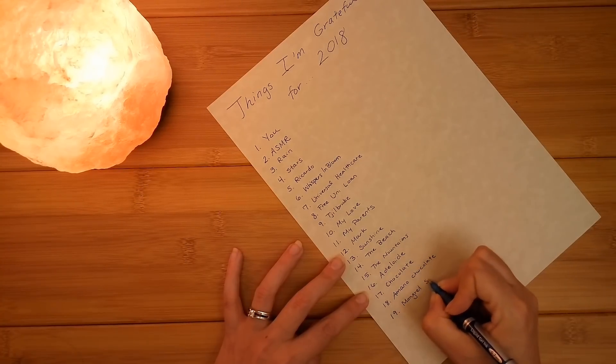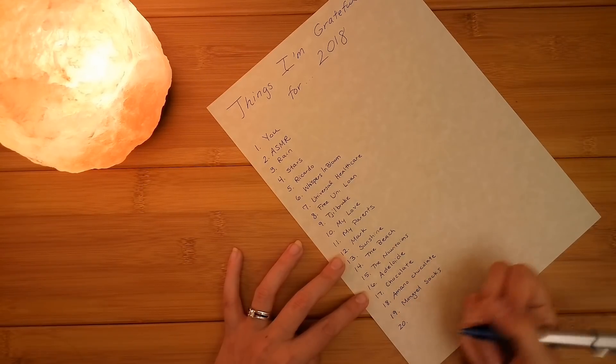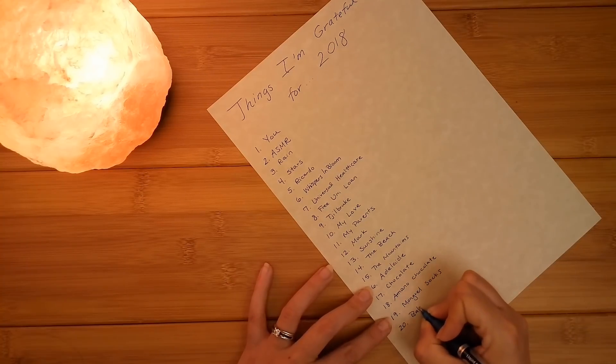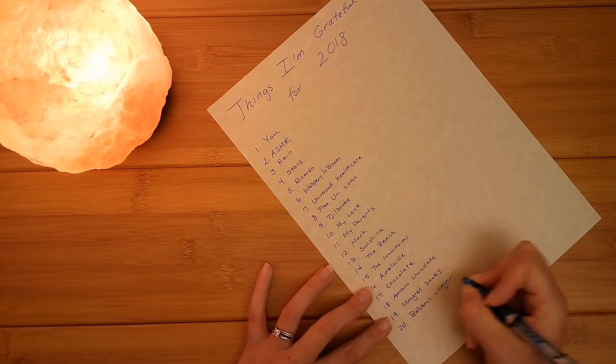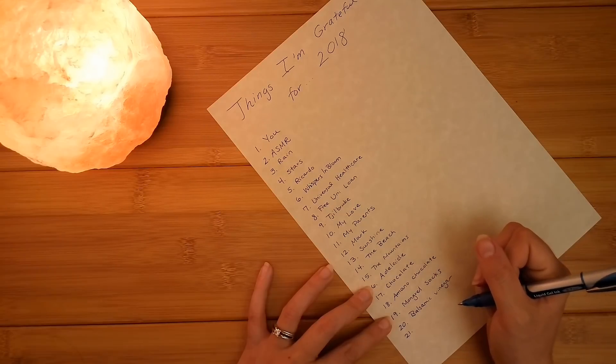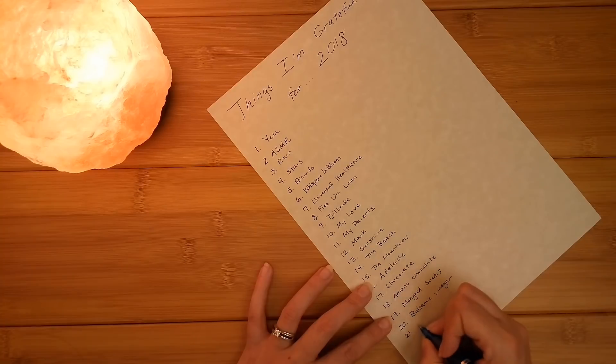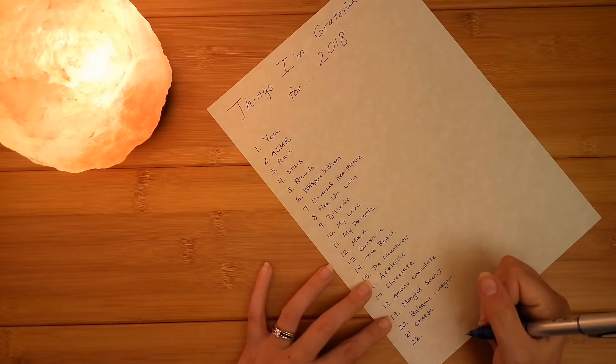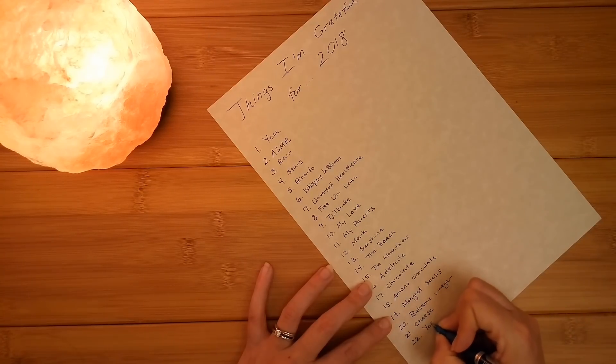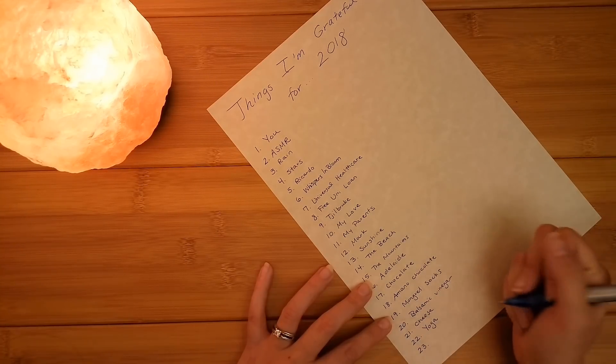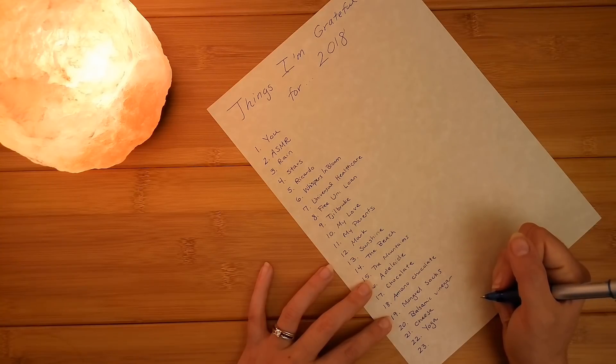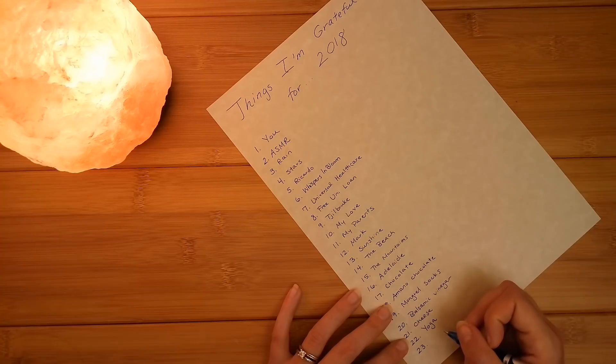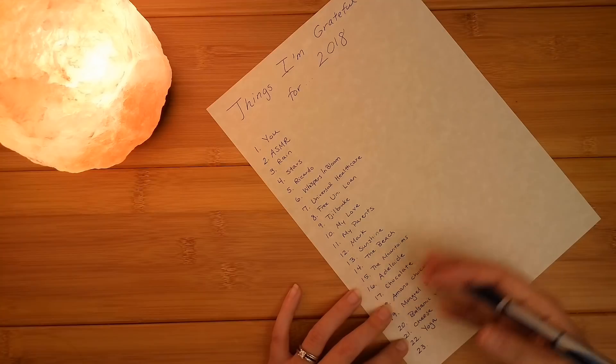Mongrel socks. Which all of you still don't have a clue about. Cause I haven't made a video on them yet. But they're amazing. Just take my word for it. Balsamic vinegar. Vinegar is an amazing thing. And balsamic is the queen of vinegars. I gotta go with cheese as well. Love, love, love, love cheese. And yoga. I always feel so good when I do yoga. I have a goal to do a little bit of yoga everyday. Not the most serious goal cause I don't keep it that well. But it is amazing. I just feel so good when I do yoga.